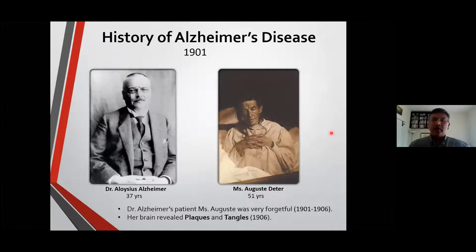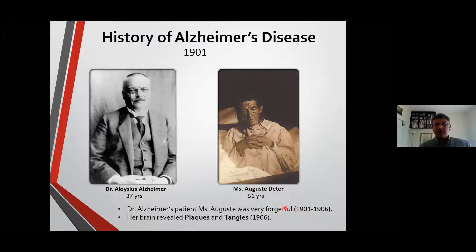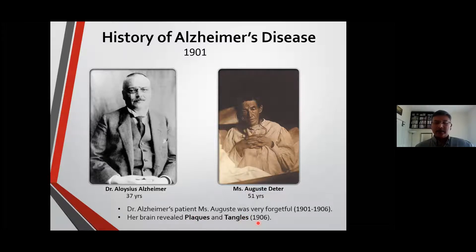A little bit of history: it started in 1901. There was a woman called Augusta, who was 51 years old when she came for diagnosis. She had problems with dementia, memory loss, and hallucinations. She met with Dr. Aloysius Alzheimer — that's where the name comes from, because he discovered someone to have this problem. He found that Augusta was really forgetful, and after she passed away six years later, when he looked at her brain, there were two really interesting things called plaques and tangles.